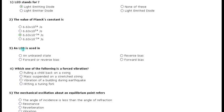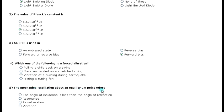Third question: an LED is used in forward bias state. Which one of the following is a forced vibration? Vibration of a building during earthquake - yes this is forced vibration. The mechanical oscillation about an equilibrium point refers to vibration.